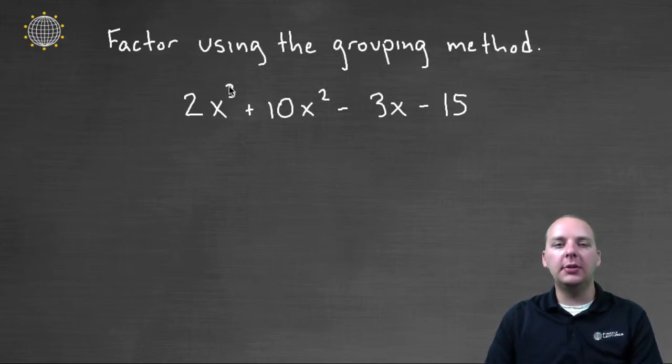We're trying to factor 2x³ + 10x² - 3x - 15 using the grouping method, which makes a lot of sense because there's four terms. Well, what we would typically do when we do factor by grouping, as you well know, is we'll group the first two terms.